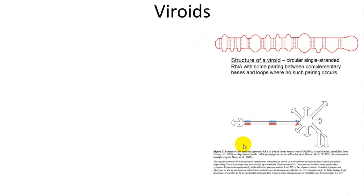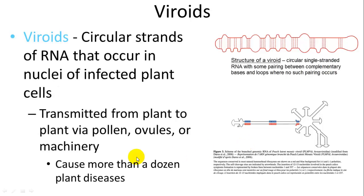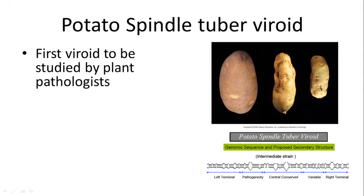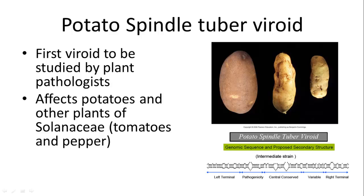Another simpler infectious agent is called a viroid. A viroid is a circular strand of RNA that occurs in the nuclei of an infected plant cell. It is transmitted from plant to plant by pollen, ovules, or other means. It causes more than a dozen different plant diseases, one of which is called potato spindle tuber viroid. It affects potatoes and other plants of the Solanaceae family, including tomatoes and peppers, and was the first viroid to be studied by plant pathologists.